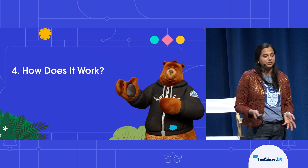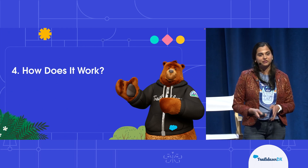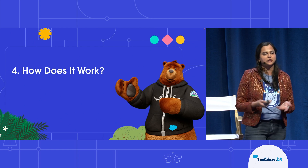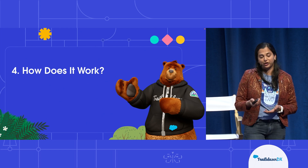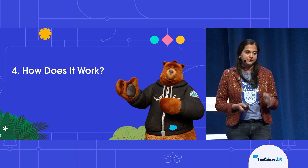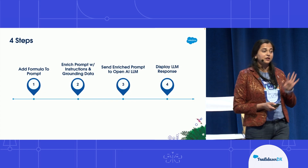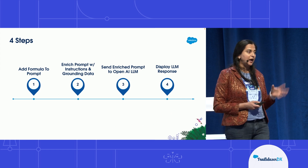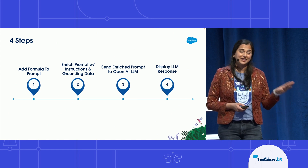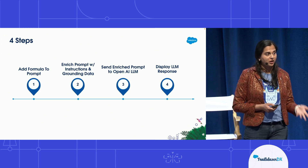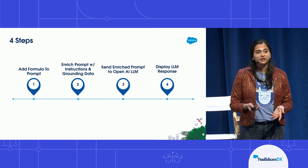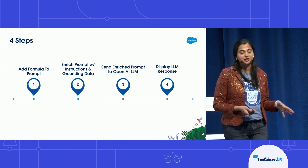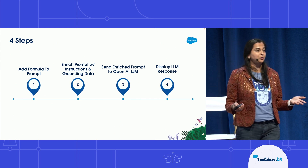So how does it all work under the hood? The TLDR version is that we are integrating our formula engine with the OpenAI APIs — the same one powering ChatGPT. But there's more to it. Let's take the first example — explaining the formula. In the first step, we add the formula you want explained to the prompt. But that's not enough — we need to enrich the prompt with context, instructions, and grounding data. Then we send this enriched prompt to the OpenAI LLM, after which we display the response.